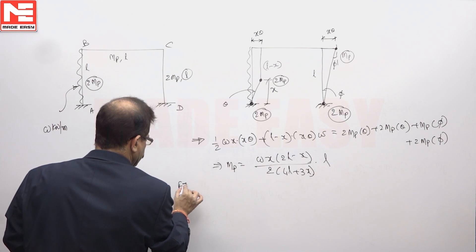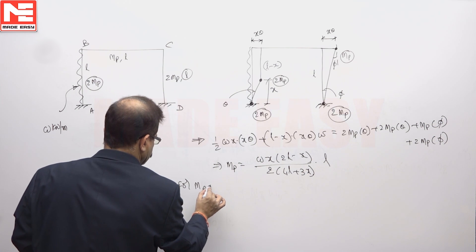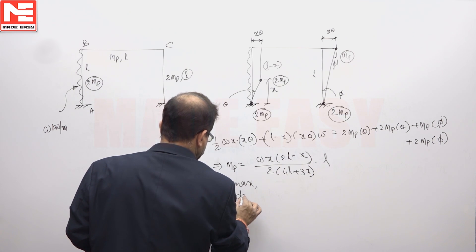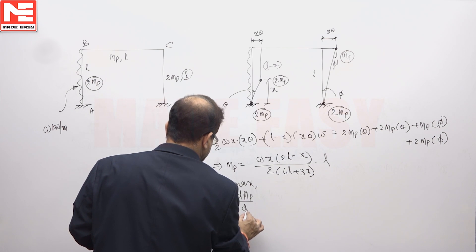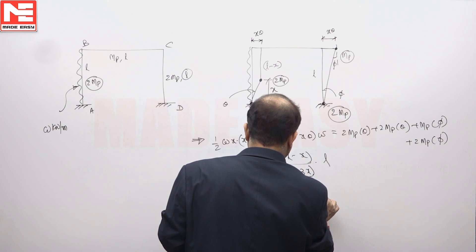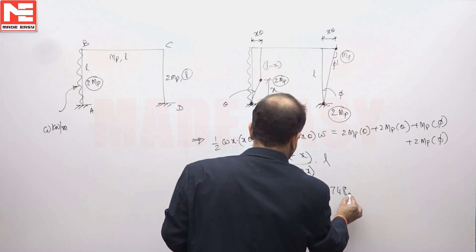For maximum MP, for MP to be maximum, dMP by dX is equal to 0, and X you will get 0.7748L.